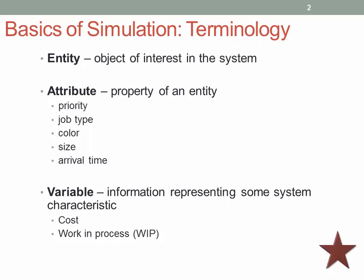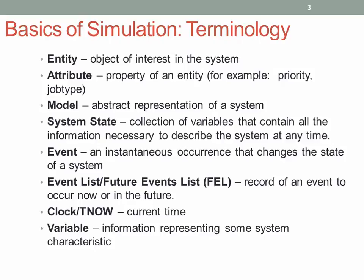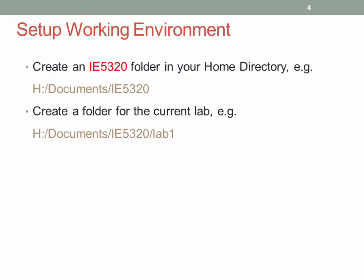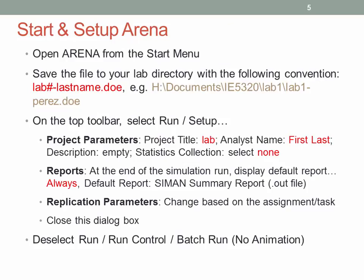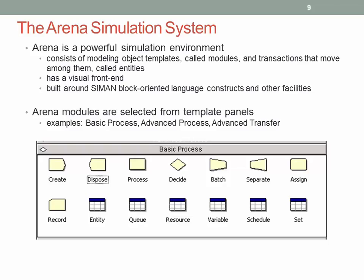We're going to focus on using variable information representing system characteristics — in particular, focusing on cost and revenue. We're going to use a combination of attributes and variables. That attribute is going to be assigned to each customer at the beginning of the simulation, coming from a distribution. It's going to assign the amount of money each customer is going to spend at the store, and then after the customer goes through the store we're going to have a tally that collects the total amount of money each customer is spending.